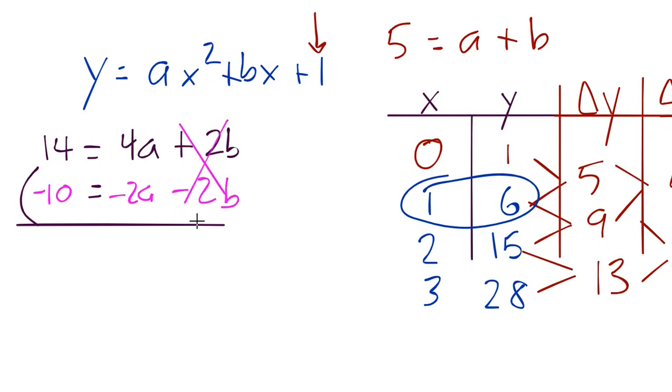And if you look, now these cancel. 2b, that's why they call it elimination because b eliminates. We could have eliminated a as well. b just happened to be a little bit easier. And now we just add like normal. 14 minus 10, 4. 4a minus 2a, we get 2a. And we just found out by dividing by 2, a is equal to 2.